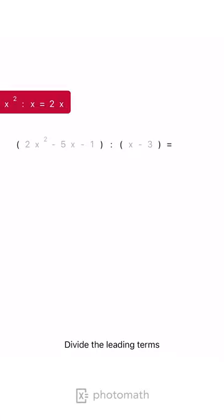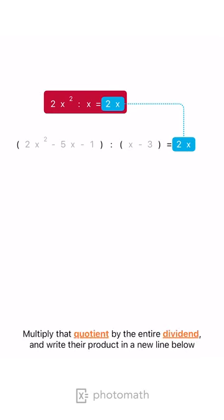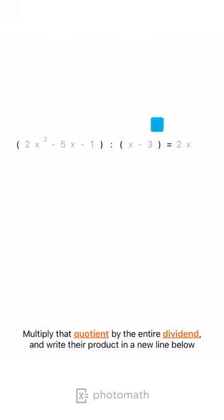Divide the leading terms, write the result in the answer line, multiply that quotient by the entire dividend, and write their product in a new line below.